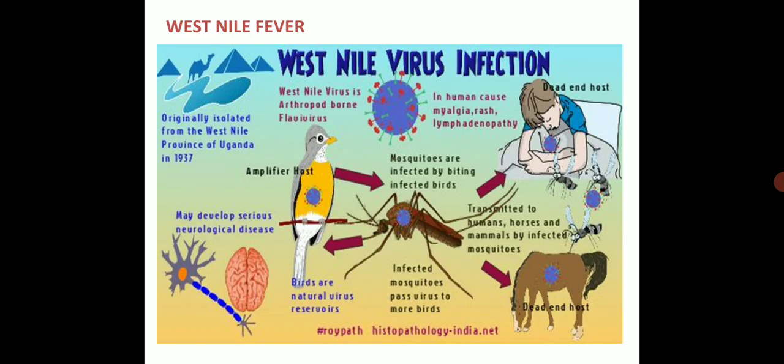The first disease caused by Culex is West Nile fever. This is an arthropod-borne flavivirus and it was originated and isolated from the West Nile province of Uganda in 1937. There are 3 important aspects: the amplifier host, the insect vector and the dead-end host.